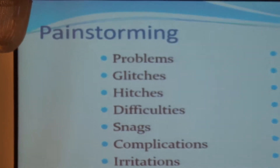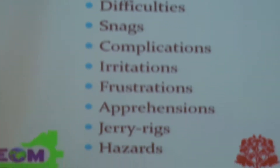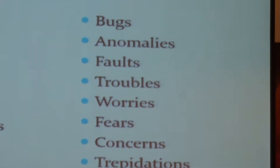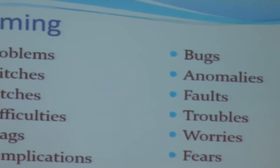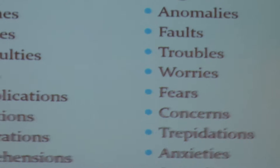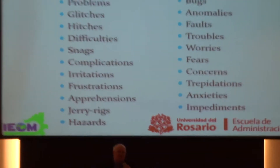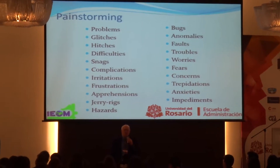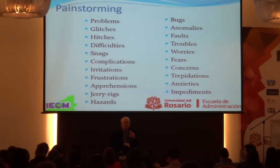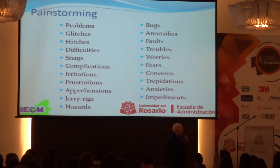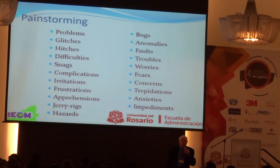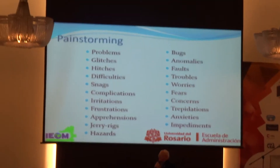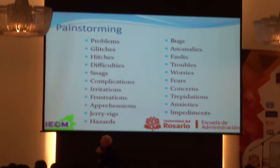There are many examples of pain storming. A vehicle is backing up — you didn't know there was a child behind the vehicle, and the child was injured. Painful. Painful to the parents. How could this have been prevented? That is a question. What was the product that was developed as a result of this pain?